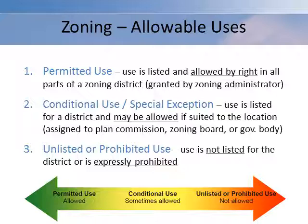Conditional uses, sometimes also referred to as special exceptions, are uses that are listed for a district and may be allowed if suited to the location. These can be assigned to one of three bodies: the plan commission, the zoning board, or the governing body. Lastly, prohibited uses are uses that are either not listed for the district or that are expressly prohibited.